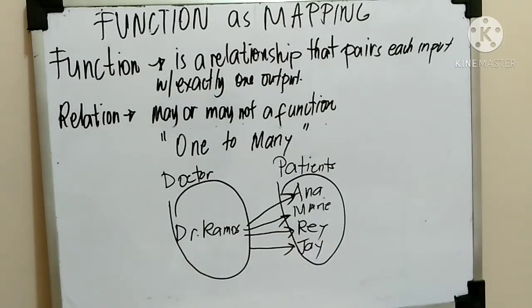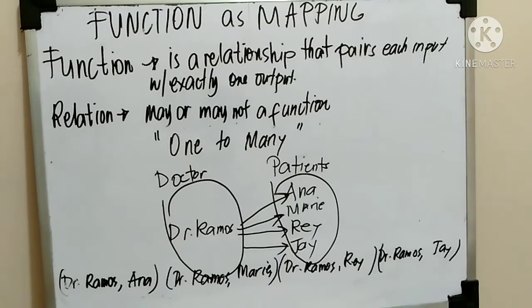Okay, kung gawin na natin siyang into ordered pairs, so mangyayari ganito. Nilagay na natin ng ordered pairs. Si Dr. Ramos, patient niya si Ana. Si Dr. Ramos, patient niya si Marie. Next, si Dr. Ramos, then si Ray yung patient niya. Then the last is Dr. Ramos, patient niya is si Jay.